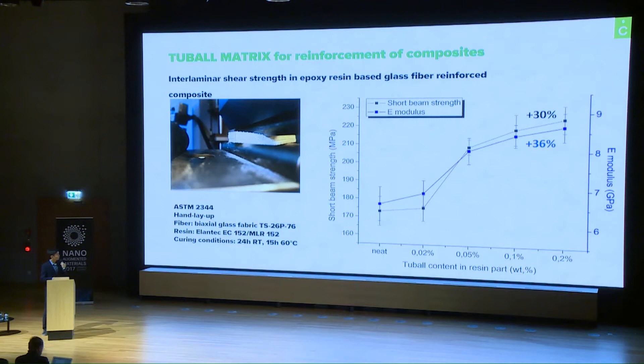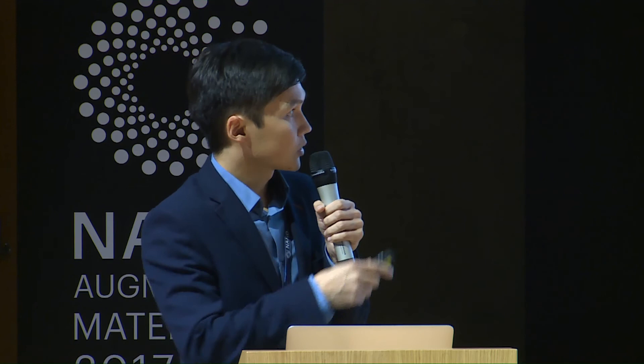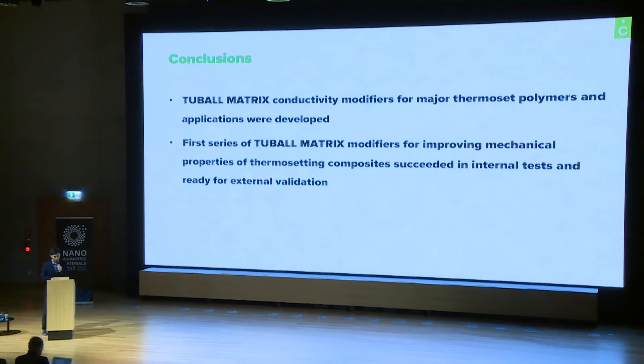Already we have a number of good results. We worked on a glass fiber reinforced composite based on epoxy resin, using a special resin from the composite industry and glass fabric, processed by hand lay-up. We achieved an improvement in interlaminar shear strength of up to 30%. Of course, this is not the limit, as our research is still ongoing.